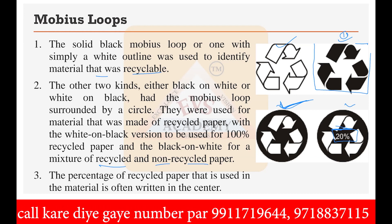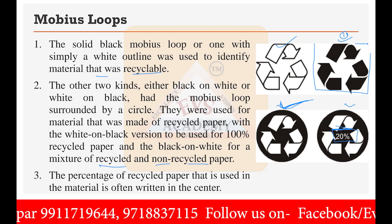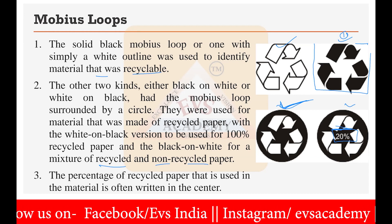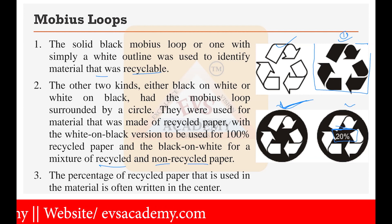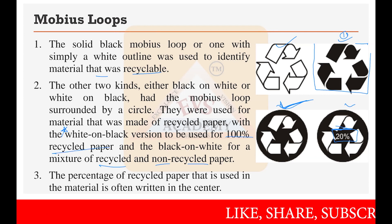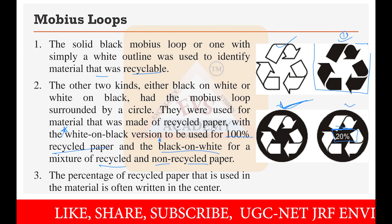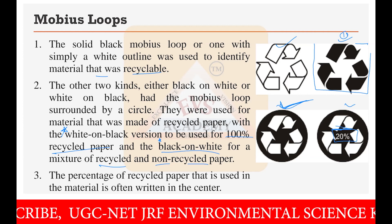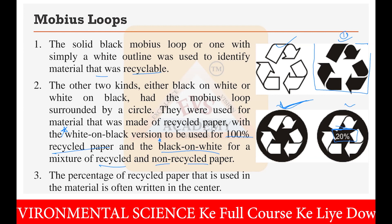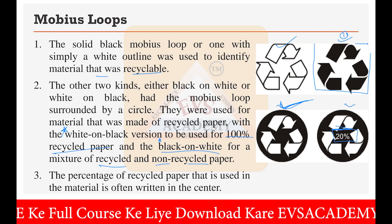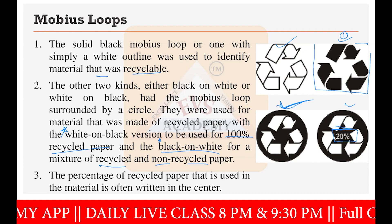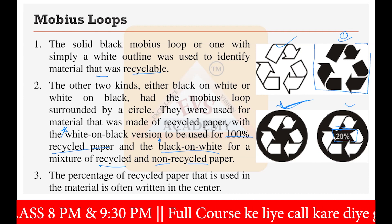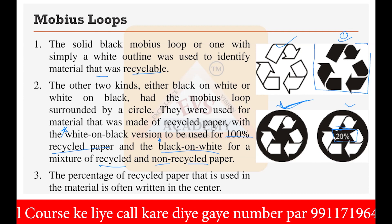In examinations, questions about the Mobius Loop have been asked in written form without images. For example, they may ask what the white-on-black version of the Mobius Loop signifies — the answer is 100% recycled paper. Or what the black-on-white version shows — a mixture of recycled and non-recyclable paper. Although images have not been provided so far in exams, they can be provided, so be ready. The meaning of all these loops should be known to you.